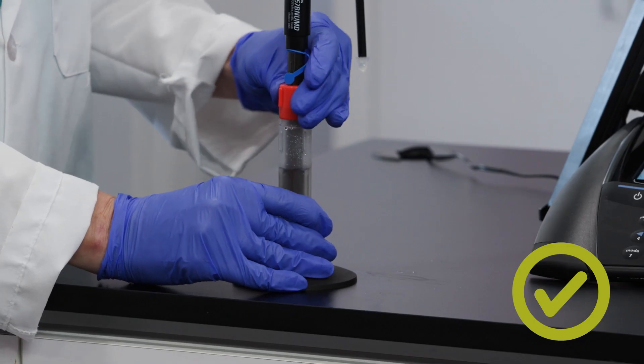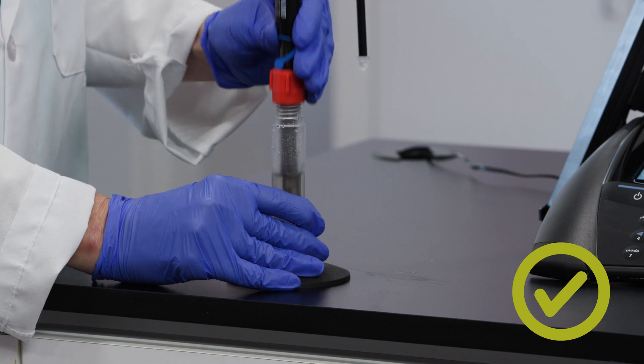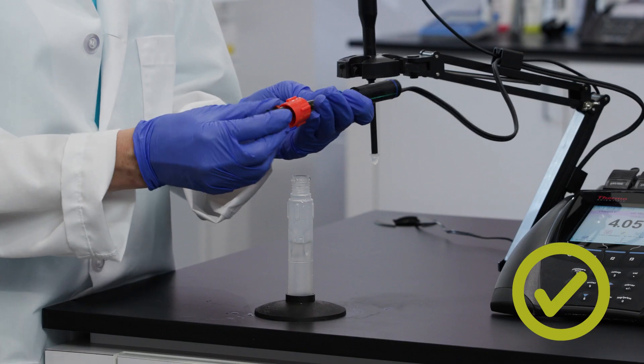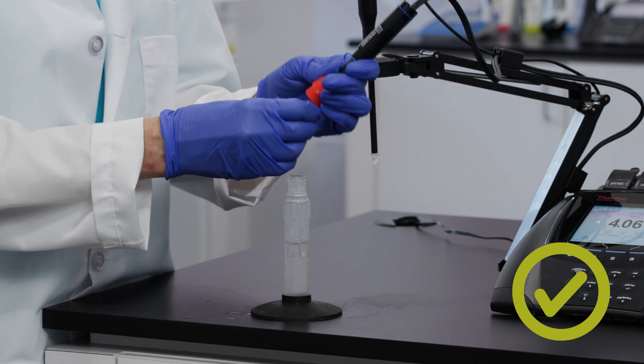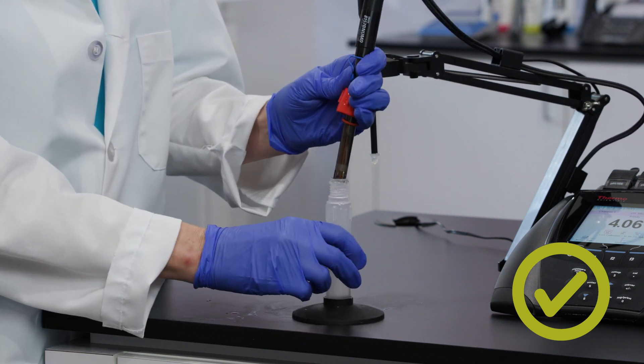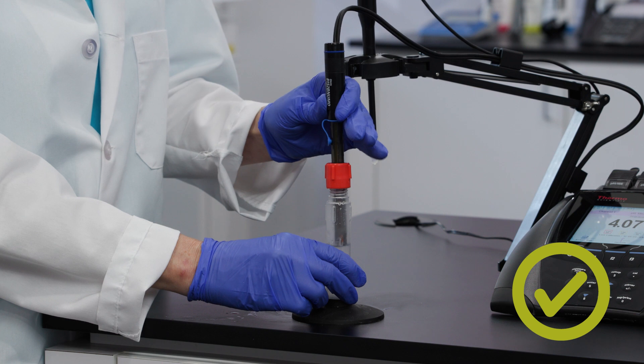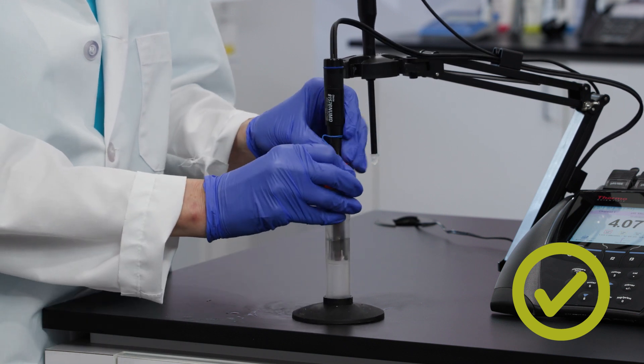We can avoid these issues by unscrewing the cap first, then removing the bottle to avoid a vacuum. When storing the electrode, push the cap onto the electrode first, then place the electrode into the bottle and tighten the cap to avoid introducing air bubbles.